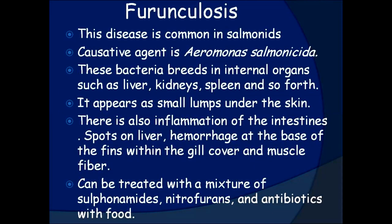Furunculosis. This disease is common in salmonids. The causative agent is Aeromonas salmonicida. These bacteria breed in internal organs such as the liver, kidneys, and spleen. It appears as small lumps under the skin. There is also inflammation of the intestines, spots on the liver, and hemorrhage at the base of the fins, within the gill cover, and in muscle fiber. Can be treated with a mixture of sulfonamides, nitrofurans, and antibiotics mixed with food.